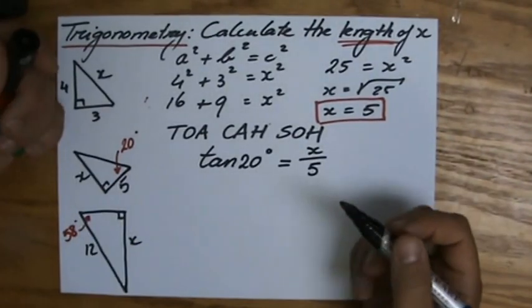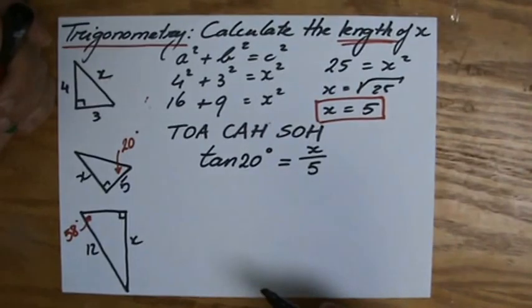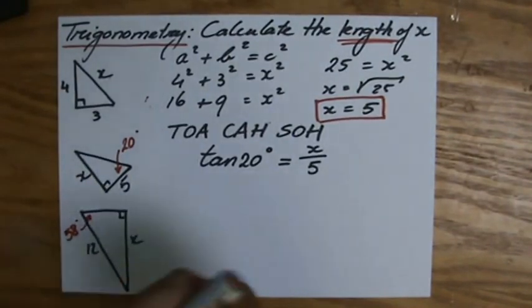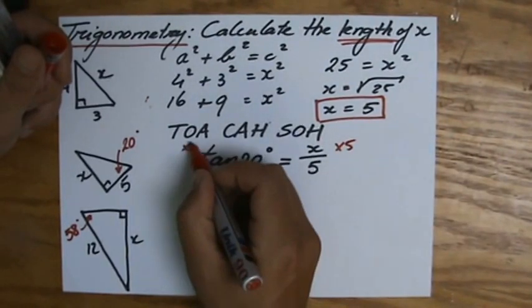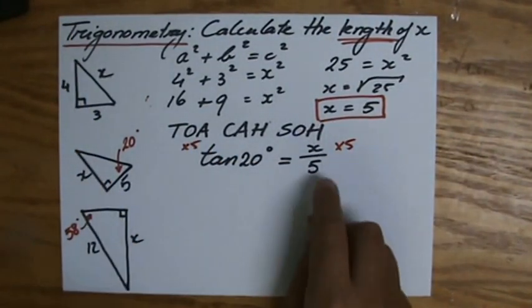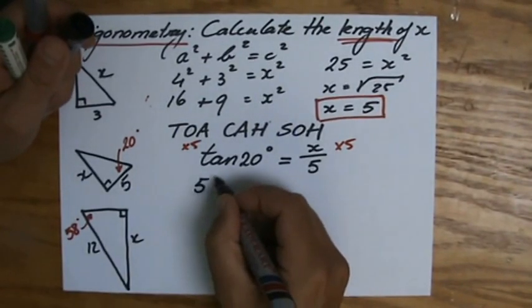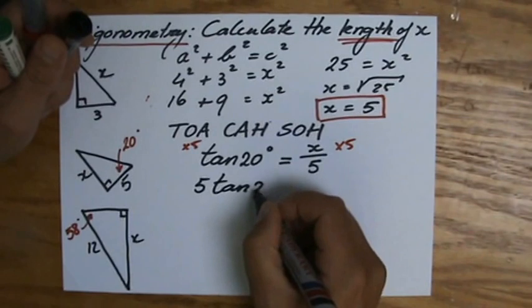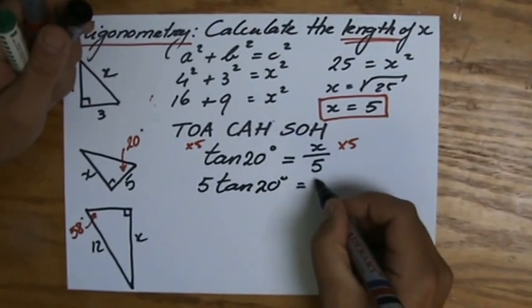And if I rearrange that equation, because I want to find out how much x is, then you really approach it as any other equation. So, you times, in this case, both sides by 5, left and right, to get rid of that fraction there. So, 5 times the tangent of 20 degrees. That would equal x.